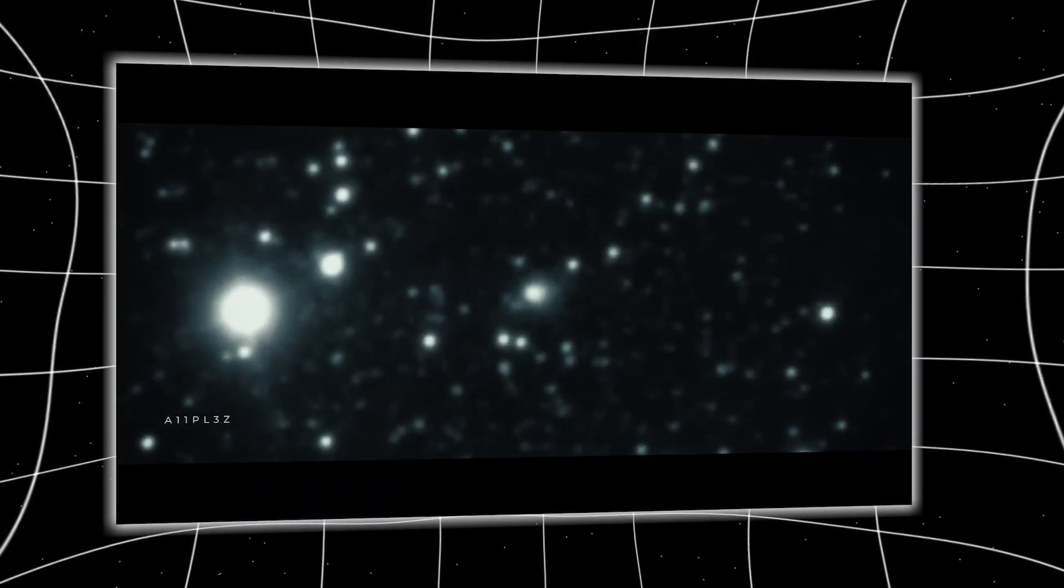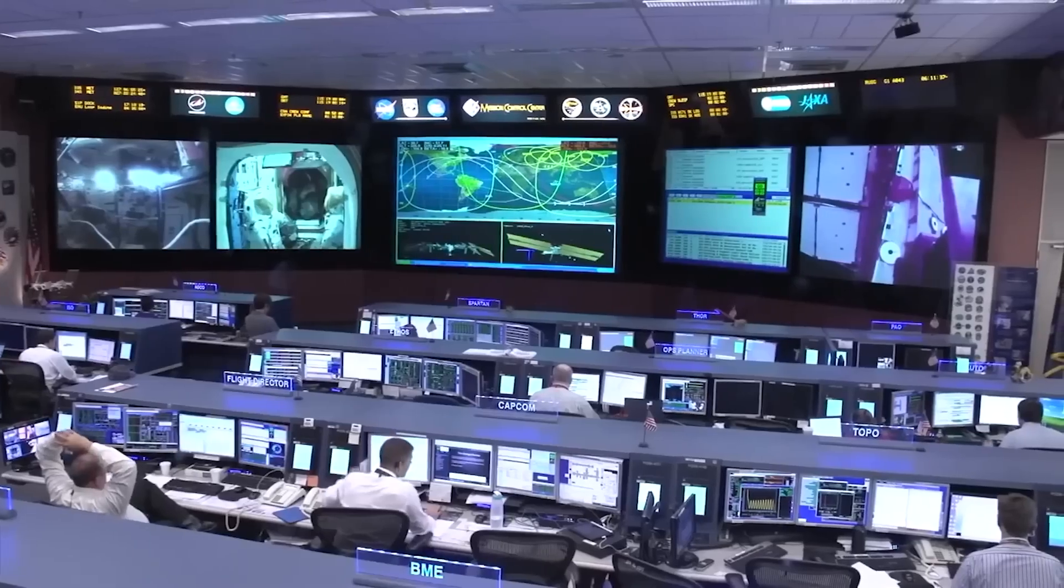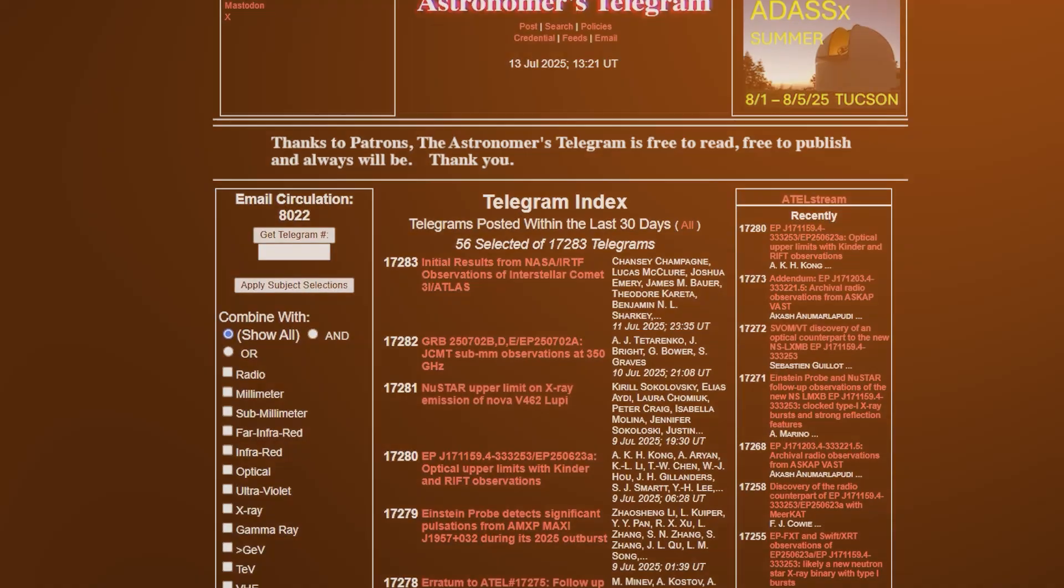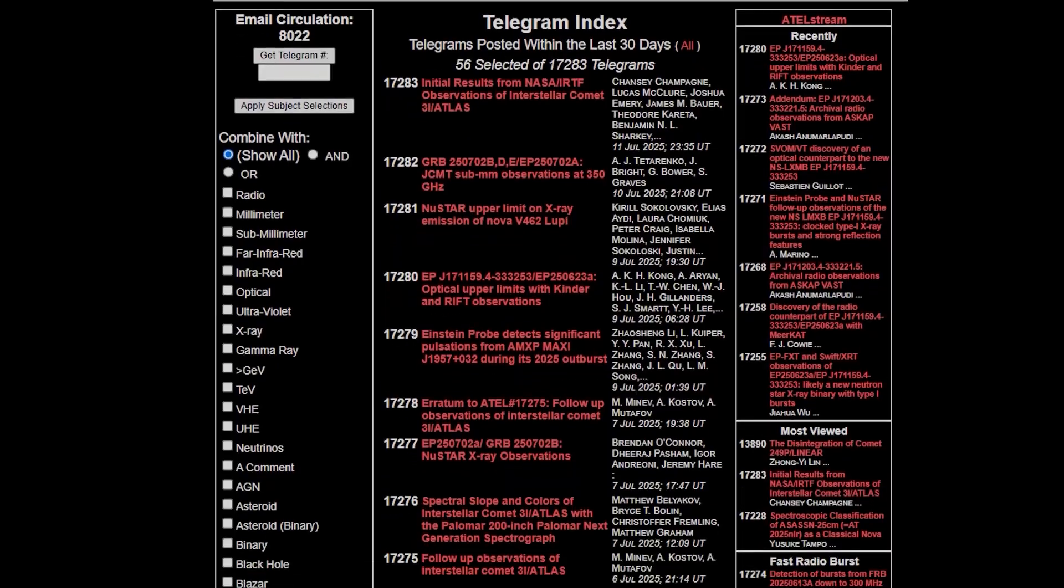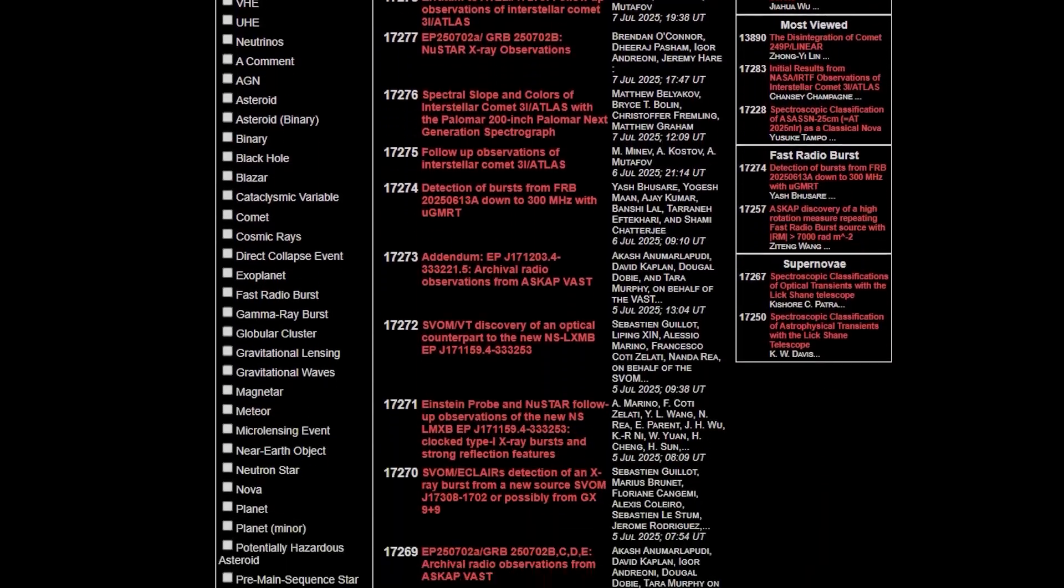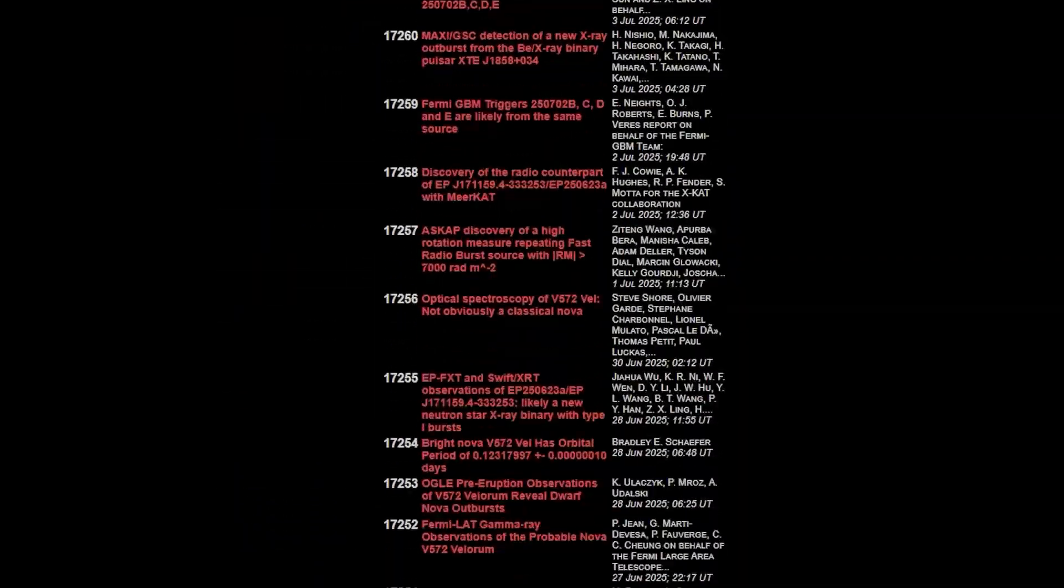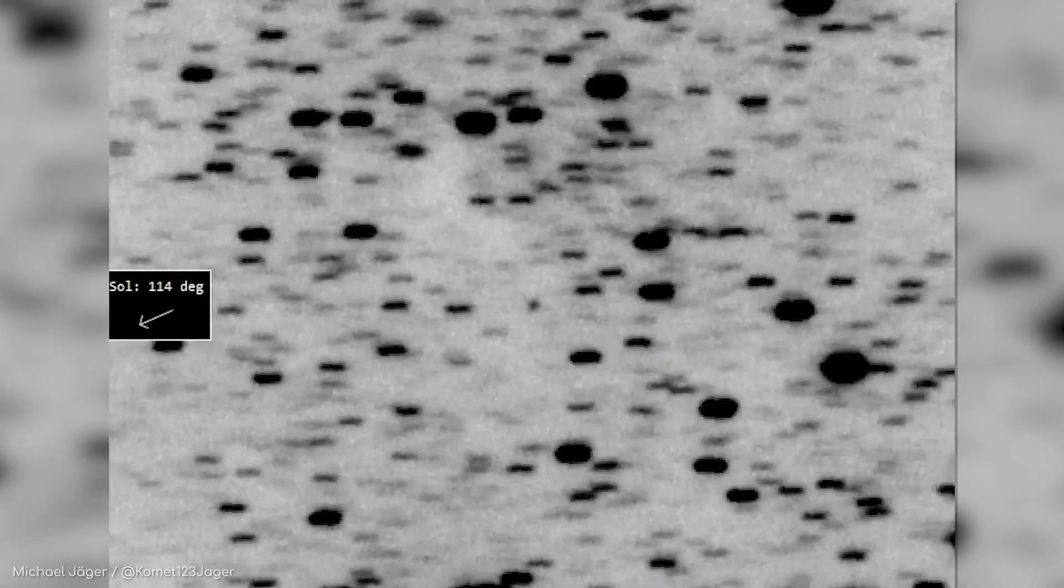Only two other objects had ever been confirmed to do that. But this one was different. The first anomaly was its approach. Instead of a chaotic plunge from the outskirts, it moved parallel to the plane of our solar system, threading a path between the orbits of the inner planets. Even more bizarre, it timed its closest approach to the sun when Earth would be on the opposite side, completely out of view.